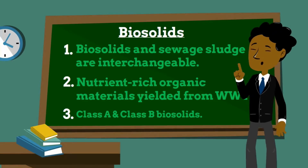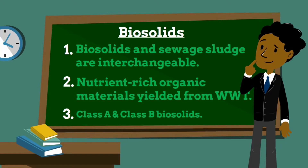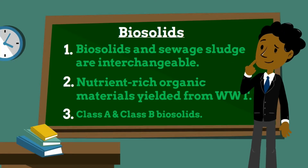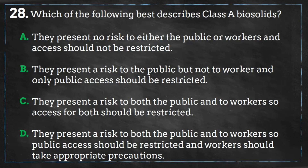Biosolids are grouped into one of two categories: Class A and Class B. Class A biosolids pathogens must be reduced to virtually non-detectable levels, and the material must also comply with strict standards regarding metals, odors, and vector attraction reduction as specified in the US EPA Part 503 rule. Class B biosolids are treated but contain higher levels of detectable pathogens than Class A biosolids, and their use may require a permit from the EPA with conditions on land application, crop harvesting, and public access.